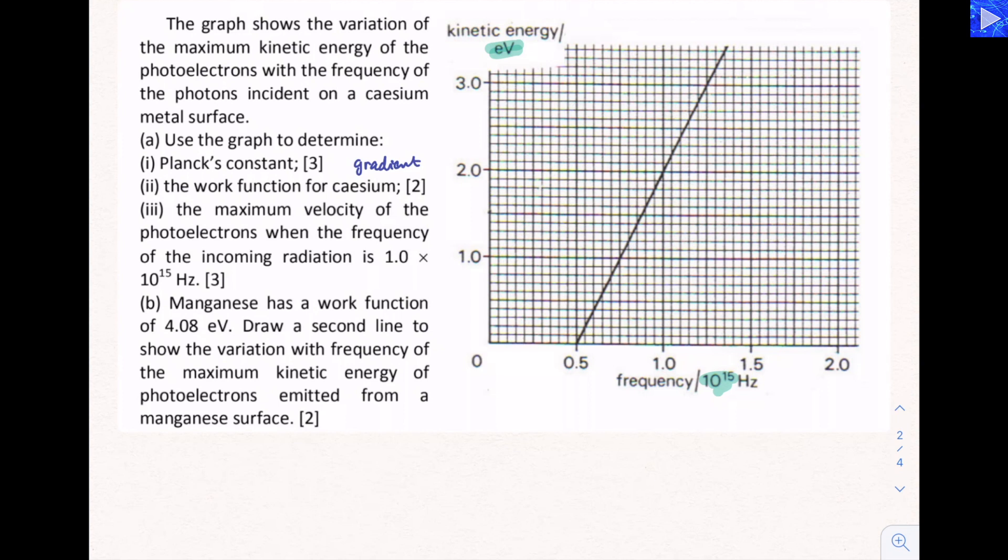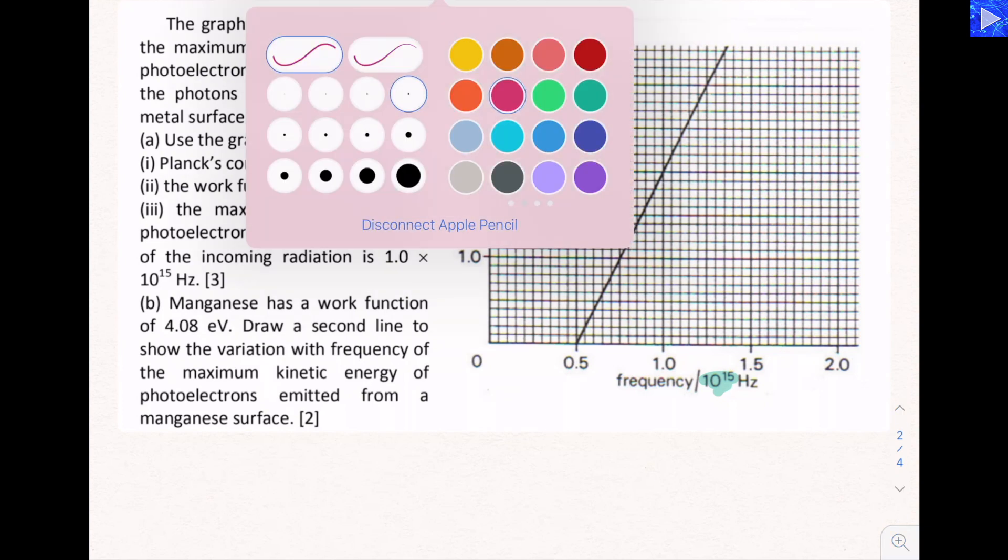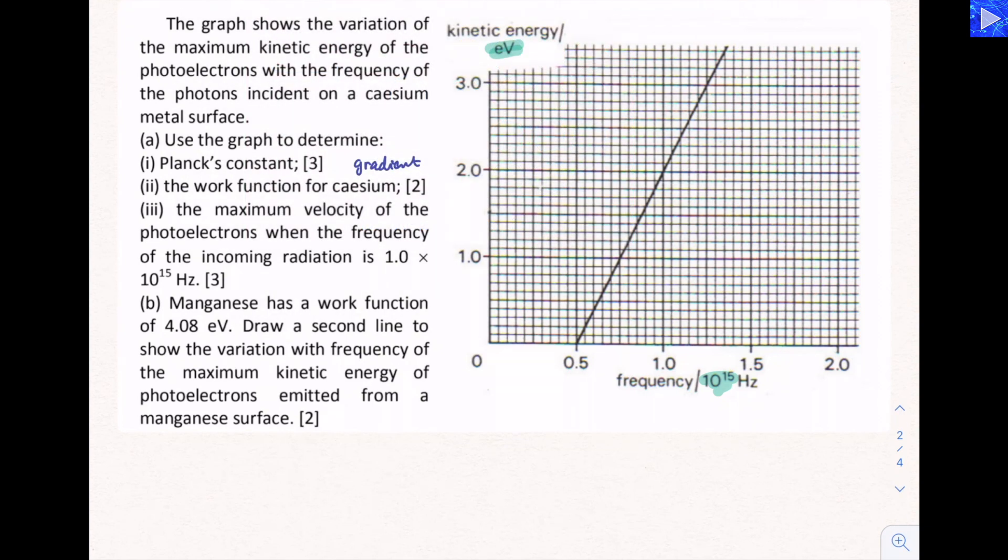Like I said, the first thing we need to do is work out the gradient. So we're going to take this point here for our first reading. That's at the 0.5 times 10 to the 15 hertz frequency point. And we can choose this point here as a good point for reading off on this grid.